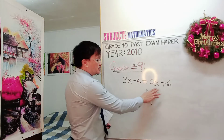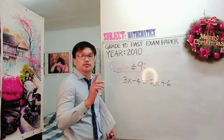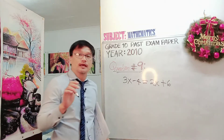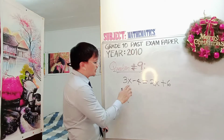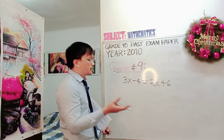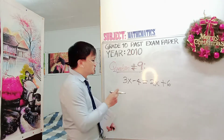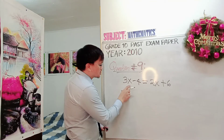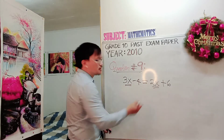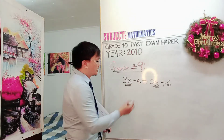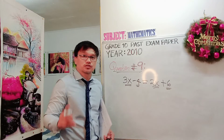When you have this kind of expression, you are going to use the rules of algebra, which is collecting like terms. When you collect like terms, you have to make sure the terms are on one side. So we have 3X and 2X, which are like terms, and negative 4 and positive 6 are also like terms.